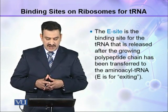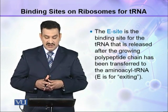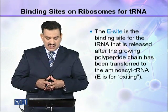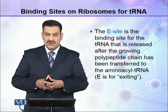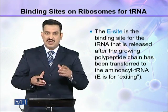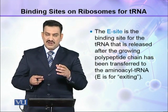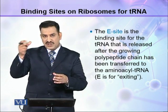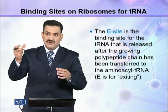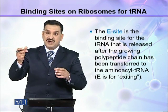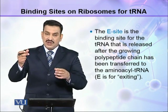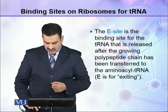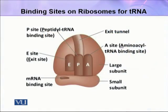The E site is a binding site for the tRNA that is released after the growing polypeptide chain has been transferred to the aminoacyl tRNA. جب peptidyl tRNA میں سے growing polypeptide اتار کے وہ aminoacyl tRNA کو دے دی جائے گی، تو یہ tRNA جو ہے یہ free ہو جائے گا، اور اس نے ribosome کو exit کرنا ہے through E site۔ E site کا نام exit کی وجہ سے ہے۔